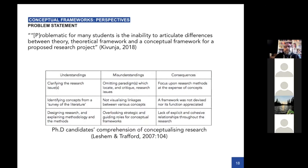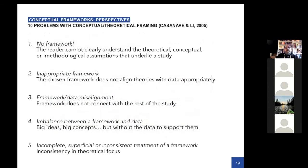There's a list from Casanave and Lee — a kind of top ten of problems you can have with a conceptual or theoretical framing in your research. You might have no framework, which in their view equates to having no theoretical or conceptual assumptions at all in a study. That may be a little harsh because a framework isn't expected in everyone's PhD — there isn't always a conceptual framework chapter. It's common, but it's only fairly recently that there's been more interest in it. Sometimes a framework might be implied, but in some cases there'll be no framework, or one that's inappropriately chosen, or one that doesn't really match up to the data you're collecting.